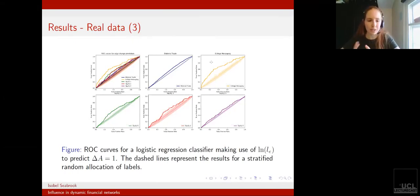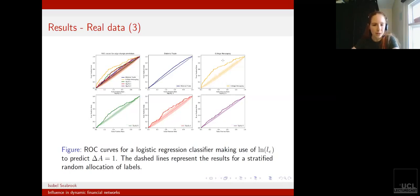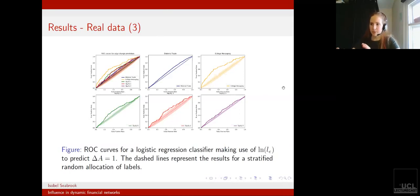First, it's worth noting that within this research we're not trying to suggest that we can predict whether or not edges change, but we want to relate the predictability to our model. We do see that the college messaging data set has a relatively reasonable performance — it's not perfect by any means, but it shows much better performance for the classifier than say the bilateral trade data set.